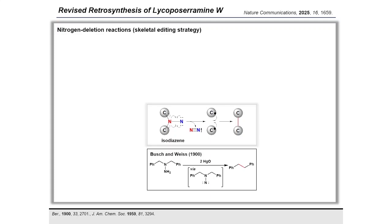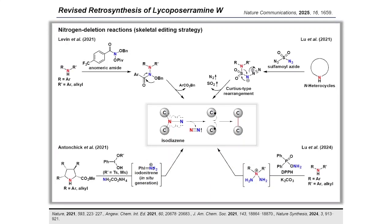This reaction was first reported in 1900 by Walsh and Weiss, who oxidized 1,1-dibenzylhydrazine with mercury oxide to obtain dibenzyl. Based on this reaction mechanism, researchers have recently developed nitrogen deletion reactions as a new C–C bond-forming method from a secondary amine using various nitrogen transfer reagents. Levin and co-workers utilized an anomeric amide that reacts with a secondary amine, followed by reductive elimination of a benzoate ester to afford an isodiazene intermediate.